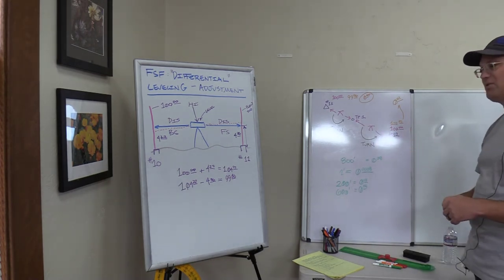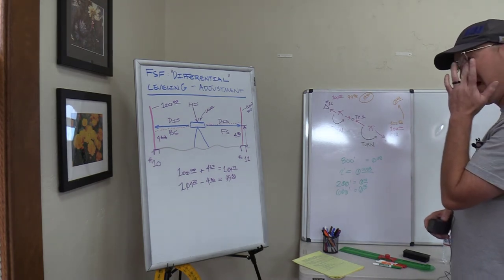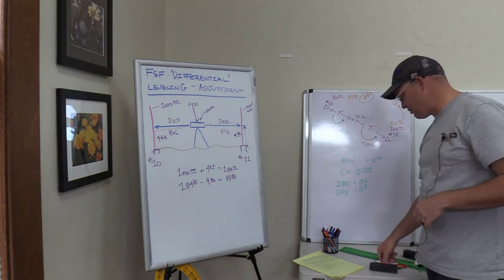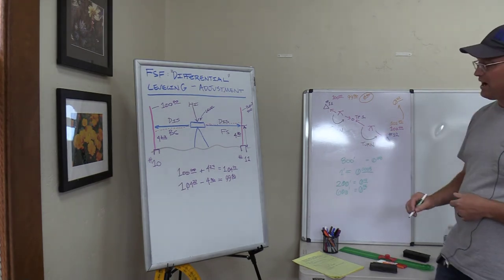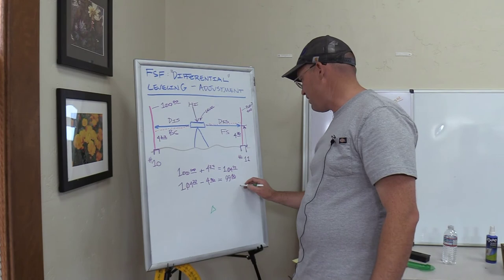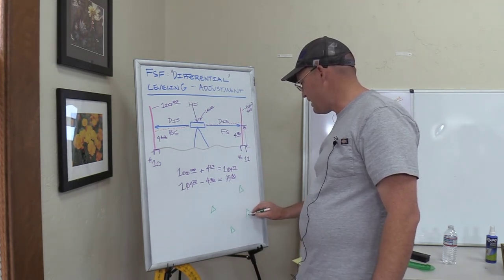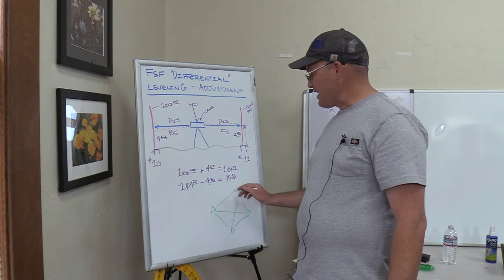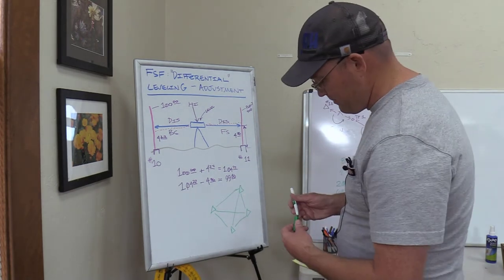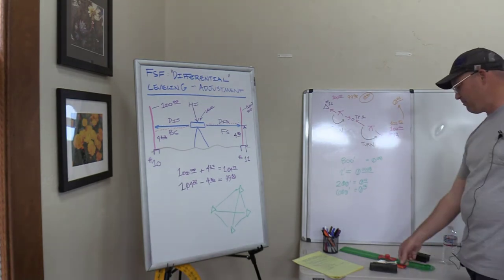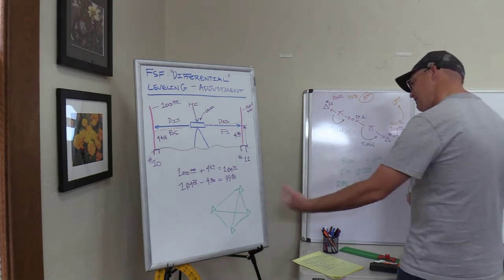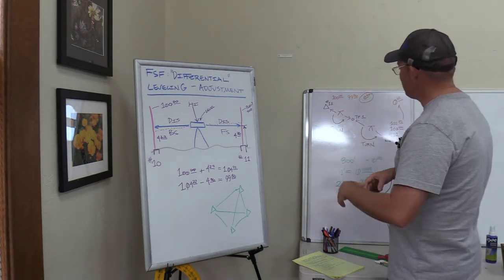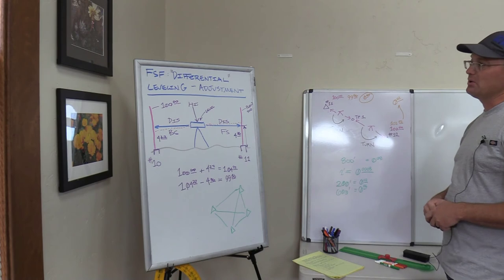The last method you could use is some kind of best-fit model — a least squares adjustment — where you assume a typical error per turn. You can't do this with just a level run or simple level loop, but if you have a network with multiple control points and cross ties, you can use a program like Starnet to do a least squares adjustment, which is just a type of best-fit adjustment. I may use leveling as an example when I do videos on best-fit adjustments.